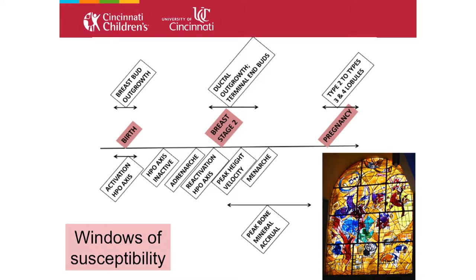Beneath the surface, at birth there's the activation of the HPG axis — full-term infants, boys and girls, have a functioning HPG axis that becomes inactive in the first six months of life. Around ages 4, 5, 6, there's adrenarche, then reactivation of the HPG axis, peak height velocity, and menarche six to nine months later. The age of menarche is related to risk of breast cancer, but a study by Algren suggests that when you insert peak height velocity into that dynamic, age of menarche is no longer significant — suggesting another underlying biology, possibly peak height velocity.